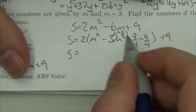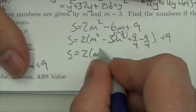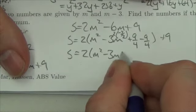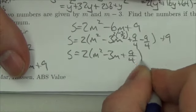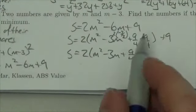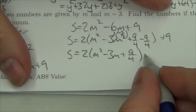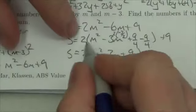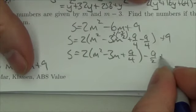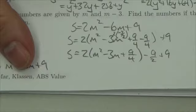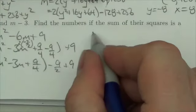So 2 times m squared minus 3m plus 9 quarters, take the negative 9 quarters out and I'm going to multiply that by 2. I'll get negative 9 halves out here plus 9. And so now factoring...